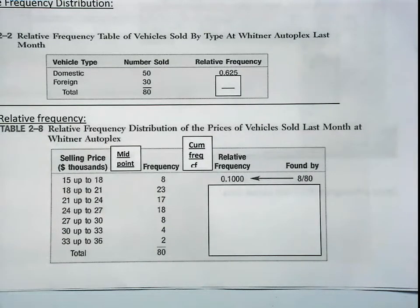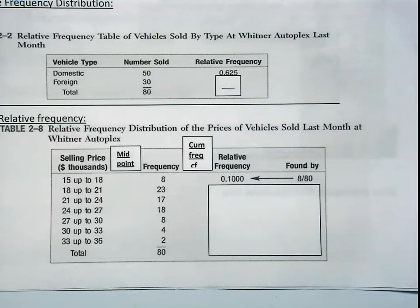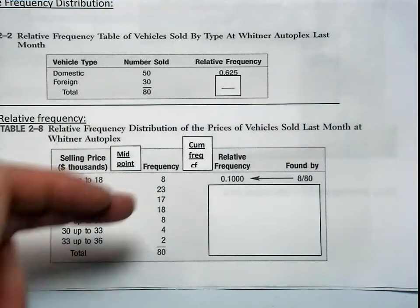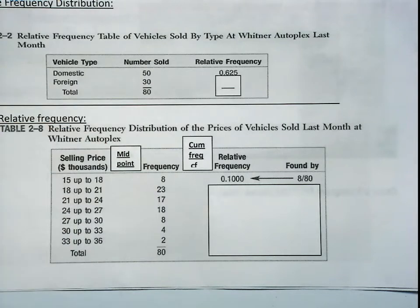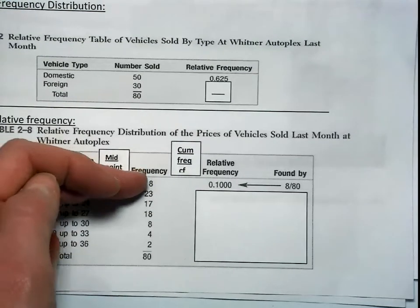We calculated the number of classes through the 2K rule, which you can find in your book. K is the number of classes — in this case it's 7. Also on your formula sheet and in the book is how you calculate the interval. Interval is the highest value in your data minus your lowest value divided by K, the number of classes. Interval was 3 in this case. So we recorded our 7 intervals, tallied up our raw data, and from our tally we got our frequencies.